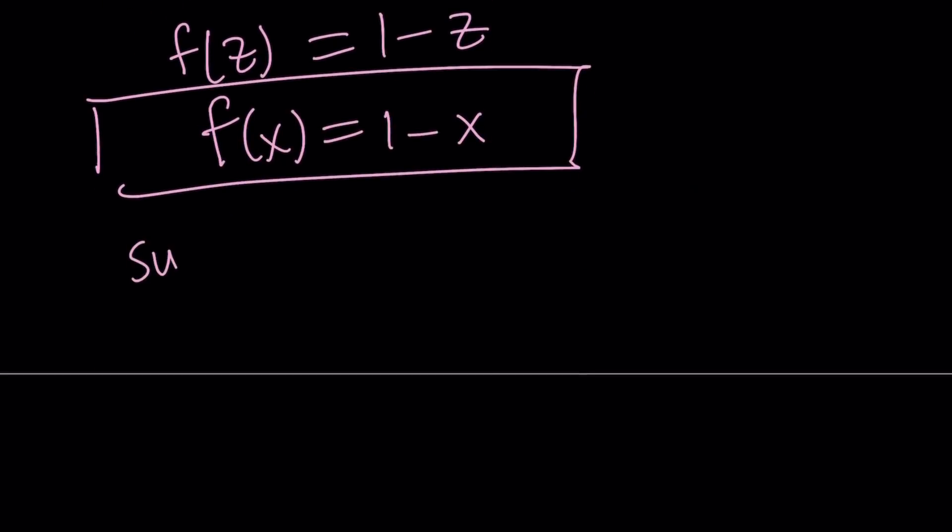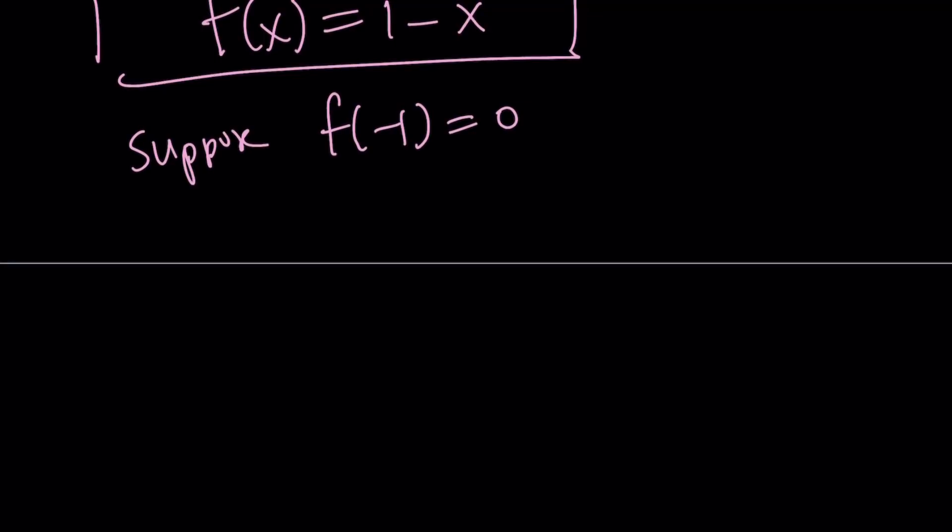Now, suppose f(-1) is equal to 0. And let's see if we can find a different solution from here. If f(1) or f(-1) equals 0, then I'm going to replace x with t+1 and y with -1. And of course, there is a motivation behind this because I want there to be a variable like t or z, and I want to take advantage of the fact that f(-1) is equal to 0. So that's the motivation.